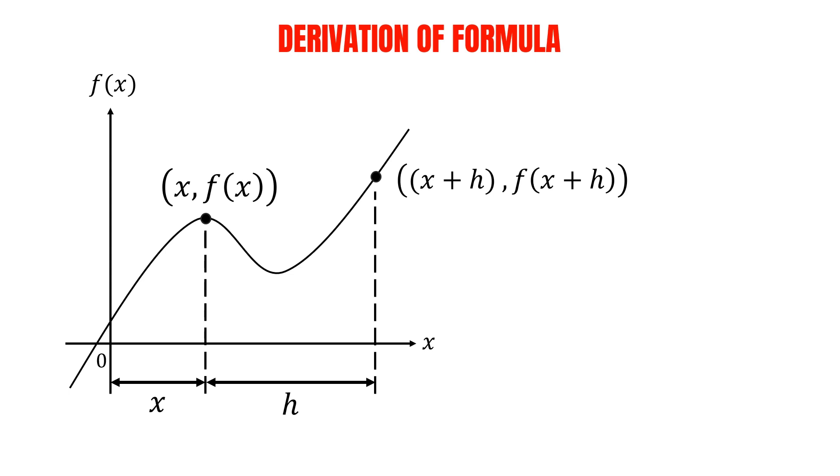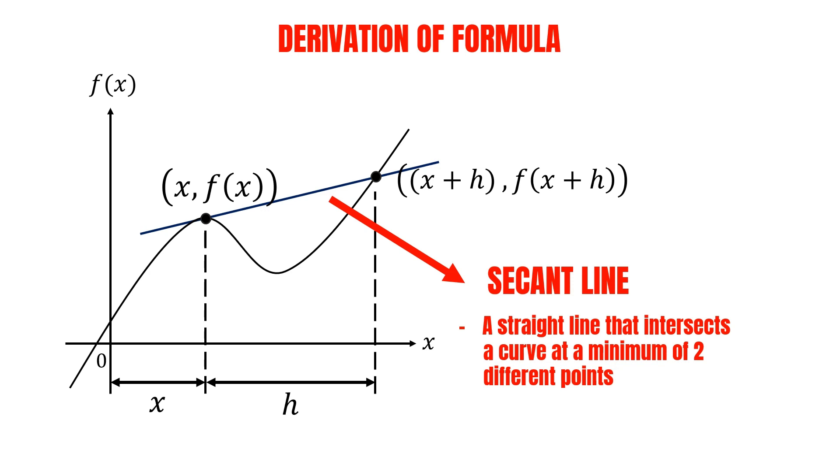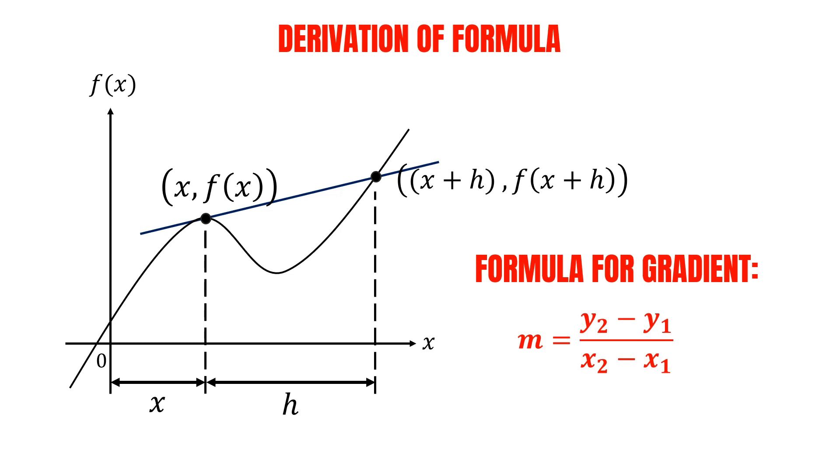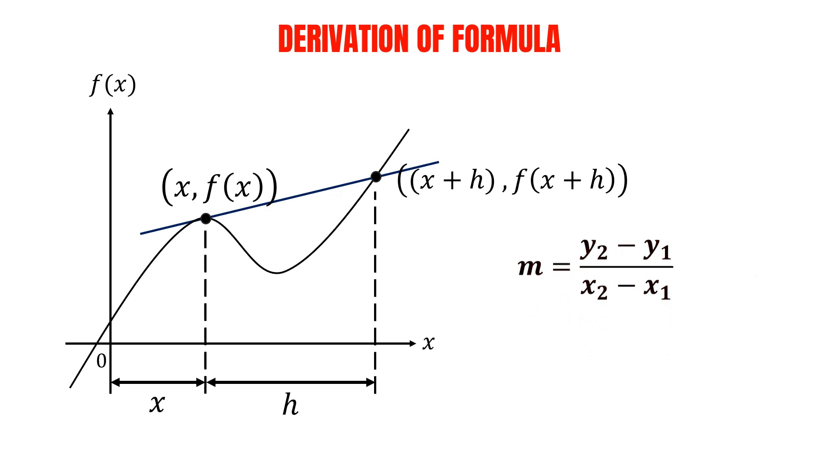As we have two points with two coordinates on the curve, we can draw a straight line passing through both the points and find the gradient of the line. This line is known as a secant line, which is a straight line that intersects a curve at a minimum of two different points. For the gradient, denoted by m, it is equal to y2 minus y1, divided by x2 minus x1.